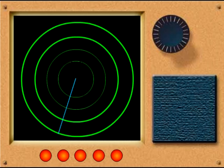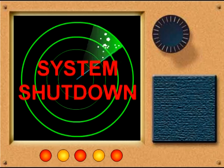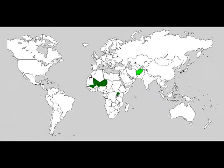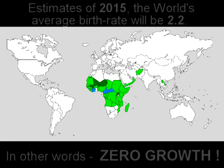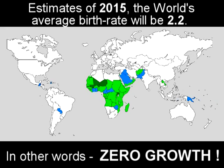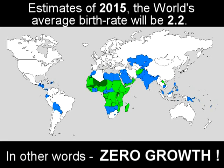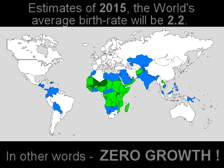Within 50 to 100 years, some of these countries — unless migration from other countries exists — there will be no one left to till the soil. By the year 2015, the worldwide average of 2.2, or stagnation, zero growth rate.